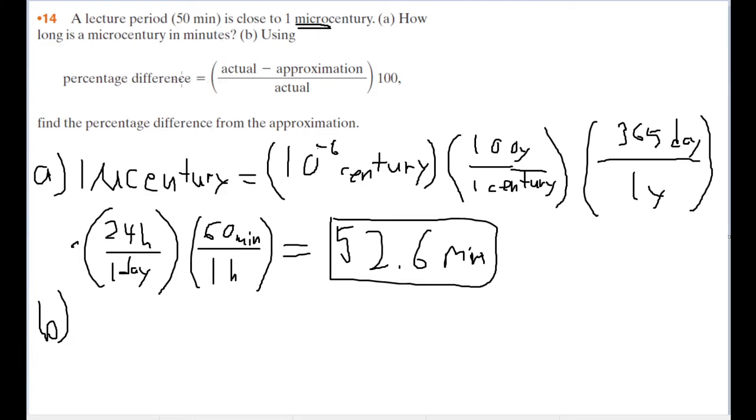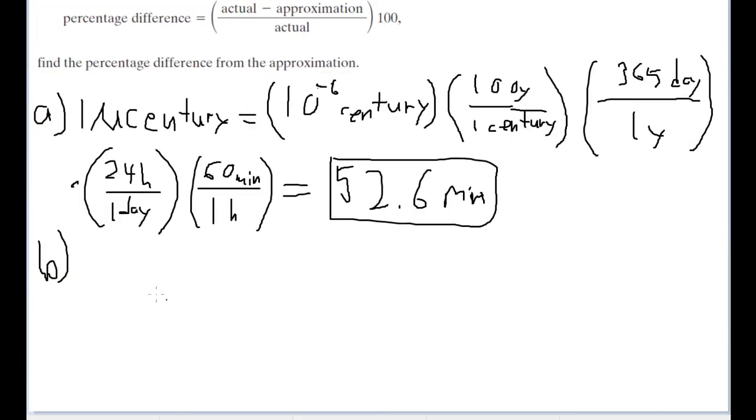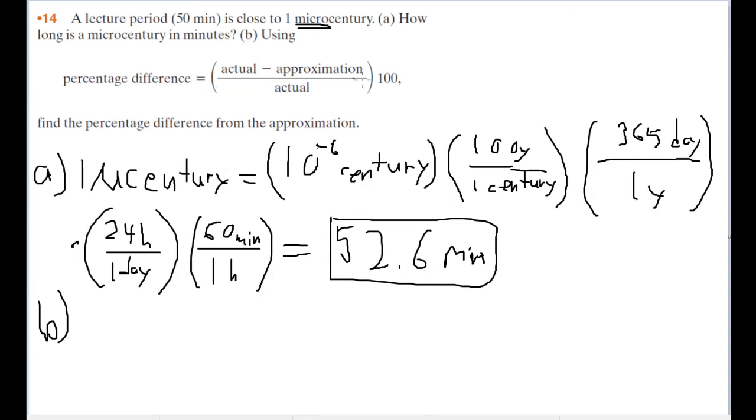So the percentage difference is going to be the actual minus the approximation divided by the actual. And that's going to get a percentage. And we could then multiply by 100 to actually get it in a percentage format.